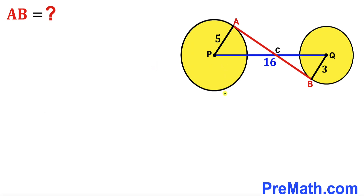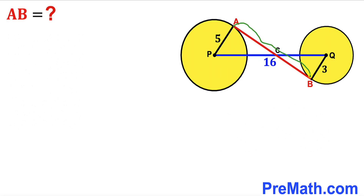Welcome to PreMath. In this video we have two yellow shaded circles put together as shown in the diagram. The center of the larger circle is P with radius 5 units, and the center of the smaller circle is Q with radius 3 units. The distance between centers P and Q is 16 units, and line AB is tangent to both circles. Our task is to find the length AB.